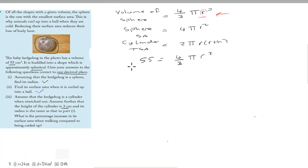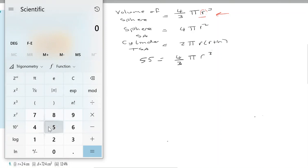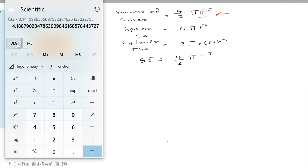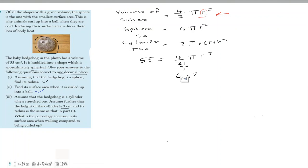First, we multiply out the four divided by three, which gives us approximately 4.188. So the equation becomes 4.188 r cubed equals 55.